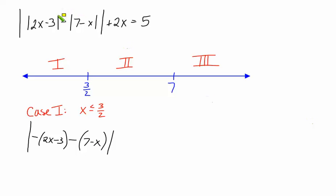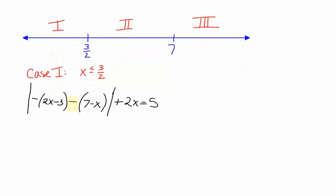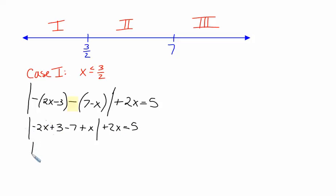Please notice we had to keep this negative sign out front because it was there — it has nothing to do with what's going on inside the absolute value. Then we have plus 2x is equal to 5. Now we clean up and simplify inside those absolute values. We distribute our negative: negative 2x plus 3 minus 7 plus x, all inside the absolute values, plus 2x is equal to 5. Cleaning up one more time, we have negative x minus 4 inside the absolute values, plus 2x equals 5.